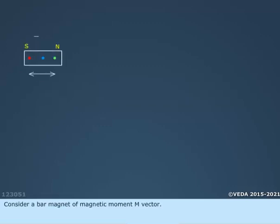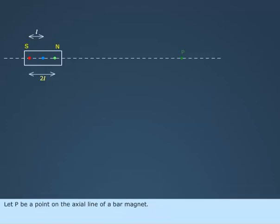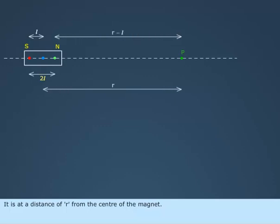Consider a bar magnet of magnetic moment M vector. Let P be a point on the axial line of a bar magnet. It is at a distance of R from the center of the magnet.